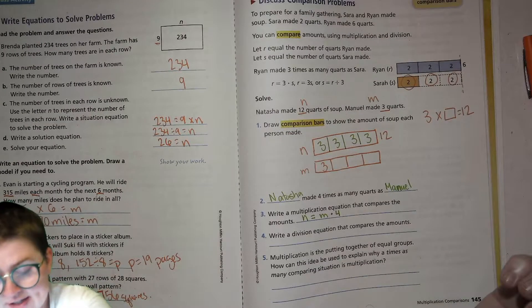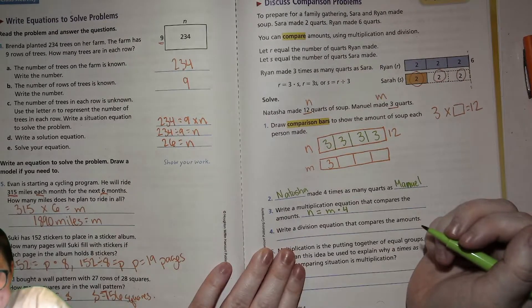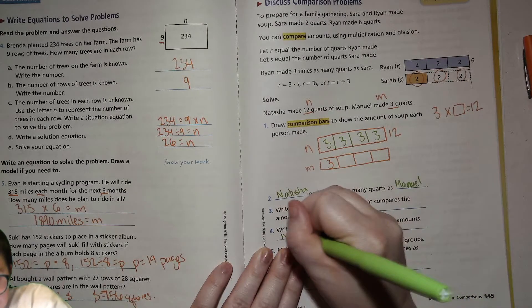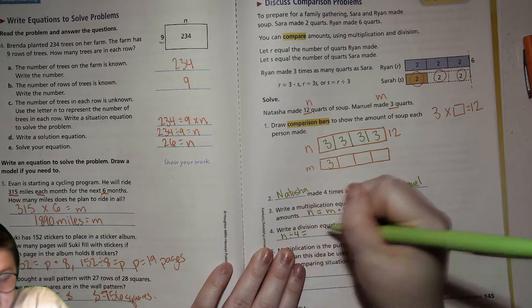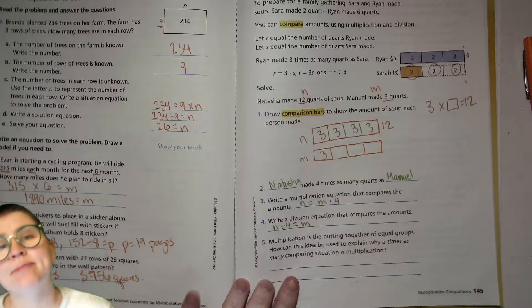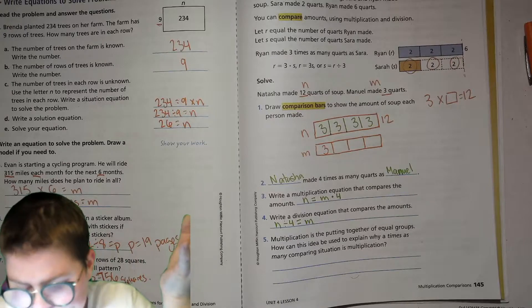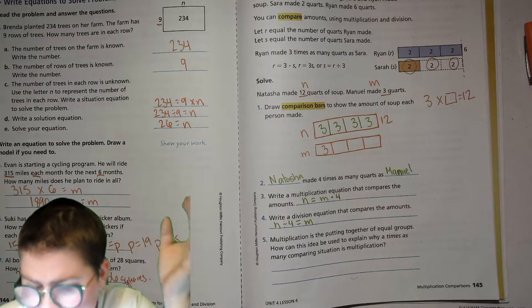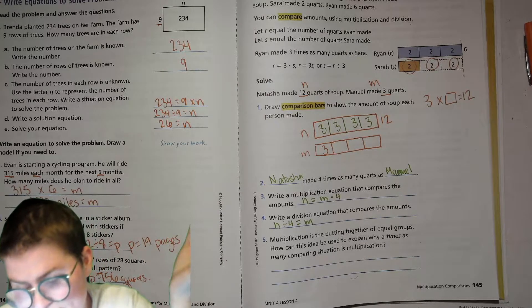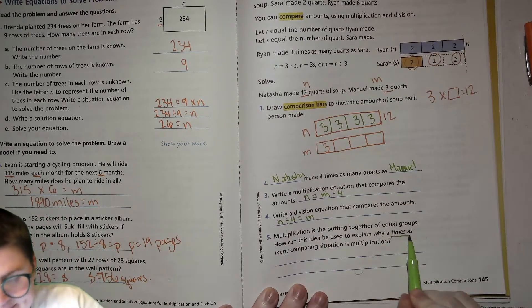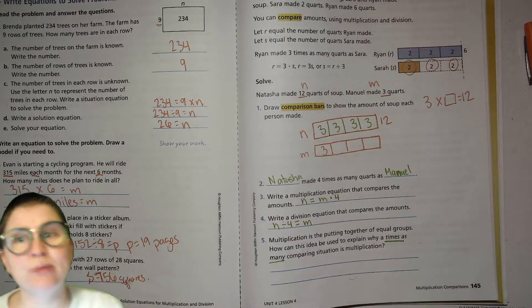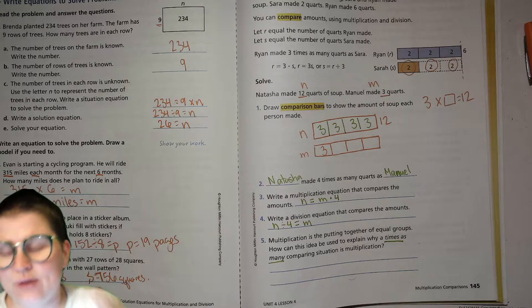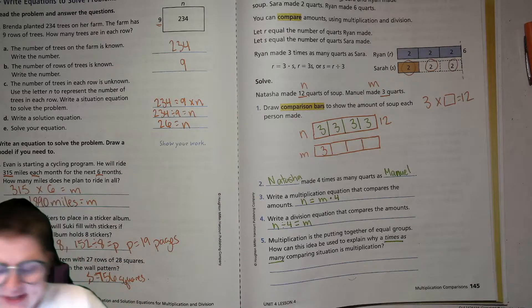So then we'll write a division equation that compares those amounts. So you could say, Natasha, if she were to divide her amount into four, it would be equal to what Manuel had made. Multiplication is the putting together of equal groups. How can this idea be used to explain why a times as many comparison situation is multiplication? So when you see times as many, it's like you're duplicating the amount that somebody has or triplicating or something like that, you are repeating that same amount multiple times. Kind of hard to put in a sentence.